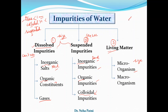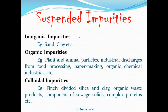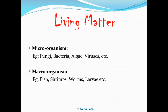So basically, first you identify the source of water, then you identify the impurities, and only then can you utilize or apply the water accordingly. To summarize: dissolved impurities include inorganic, organic, and gases; suspended impurities include inorganic, organic, and colloidal; and living matter includes microorganisms and macro-organisms. In the next lecture we will cover the main property of water, which is hardness of water. Till then, keep liking and subscribing the channel. Thank you.